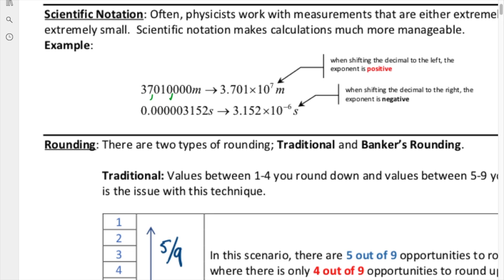To convert that into scientific notation, we want to shift our decimal point. In previous classes, maybe you were just shown how to do this, but not necessarily the reasons why. We're going to take this decimal place and move it 1, 2, 3, 4, 5, 6, and 7 positions. That's where we get the 7 from — we shifted the decimal place to the left 7 times.